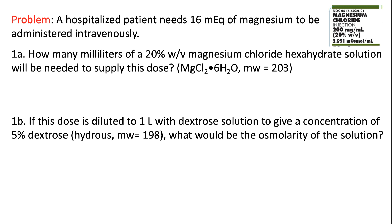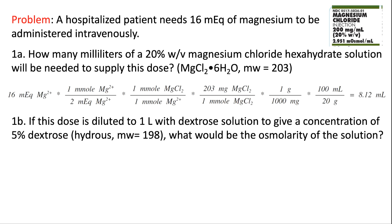Our first problem has multiple parts. A hospitalized patient needs 16 milliequivalents of magnesium to be administered intravenously. Part 1A says: to give those 16 milliequivalents of magnesium, how many milliliters of a 20% weight per volume magnesium chloride hexahydrate solution will be needed to provide this dose? The molecular formula and molecular weight for magnesium chloride hexahydrate are provided. Our target is 16 milliequivalents of magnesium.